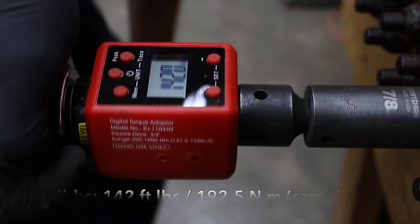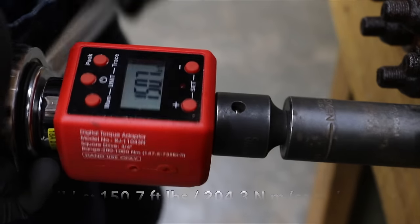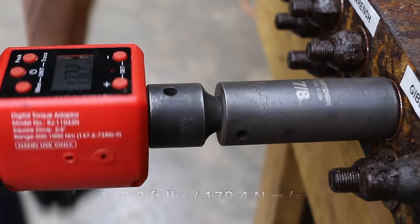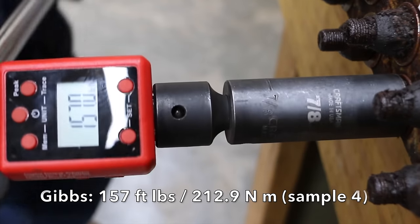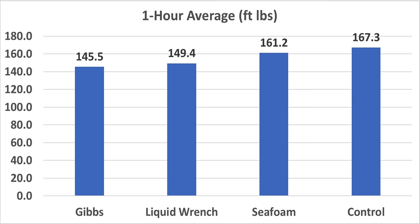The first needed 142. The second required 150.7. The third took 132.2. The fourth broke free at 157. So Gibbs beat both liquid wrench and Seafoam. After one hour, Gibbs came in first place, liquid wrench second, and Seafoam third.